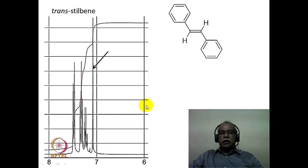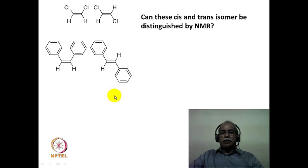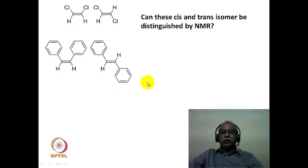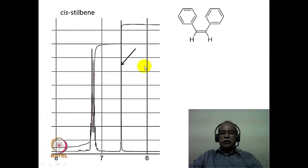Looking at the spectrum of the trans isomer: the trans isomer also shows a singlet for the two olefinic hydrogens of 2 hydrogen intensity, and the phenyl groups appear as a complex multiplet of 10 hydrogen intensity. The point is that symmetrical structures do not offer coupling information because of the chemical and magnetic equivalence of these hydrogens. So how does one determine which is the cis and which is the trans? If we have spectra of both isomers, it is possible to rationalize this.